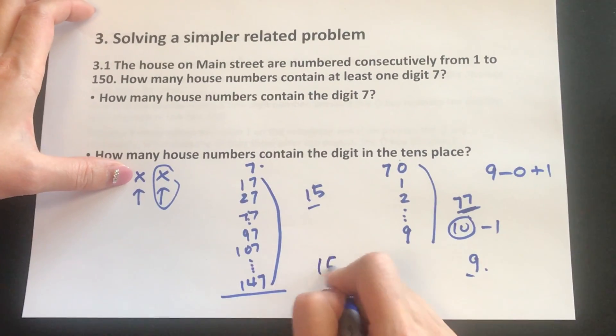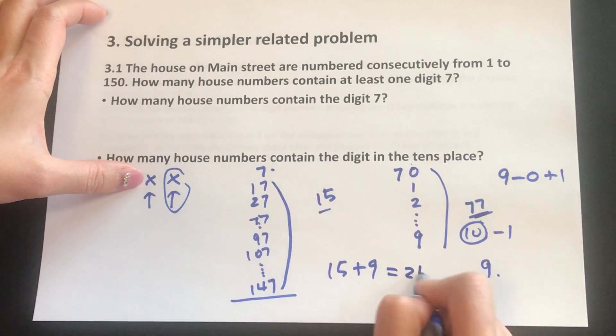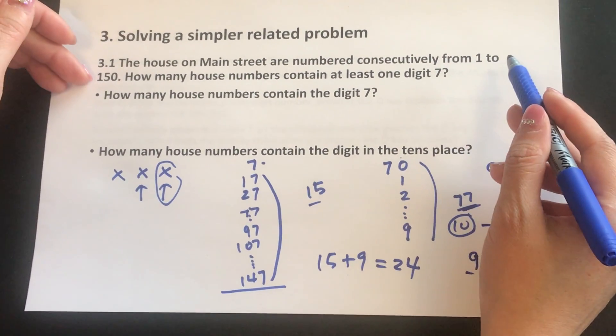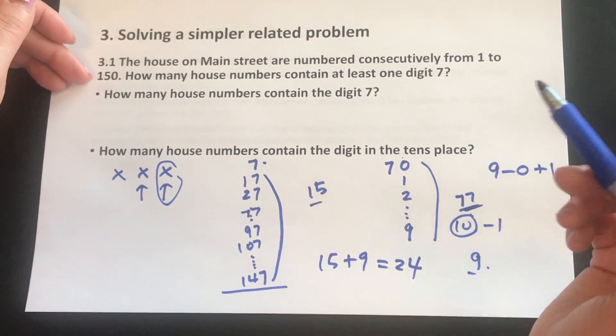The total would be 15 plus 9, which is 24. There are 24 numbers between 1 to 150 that has a digit 7.